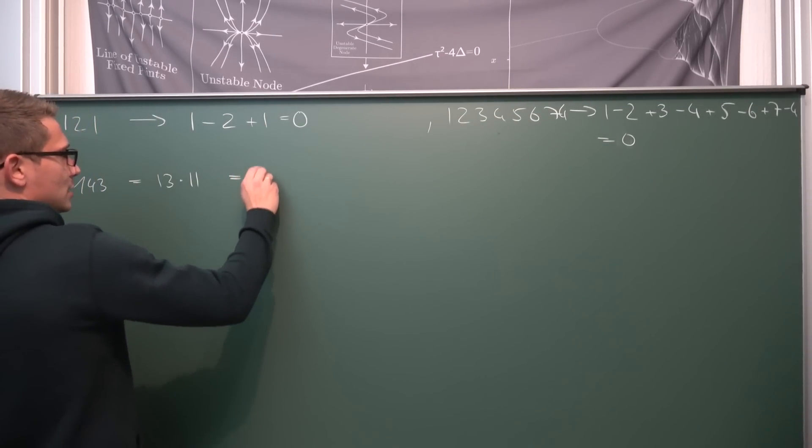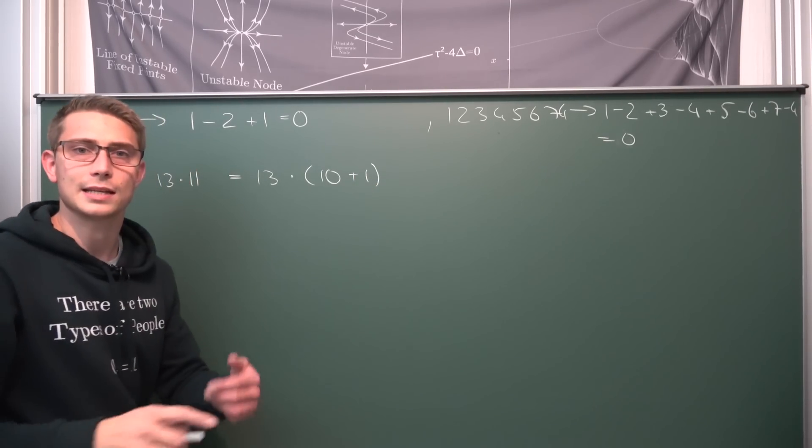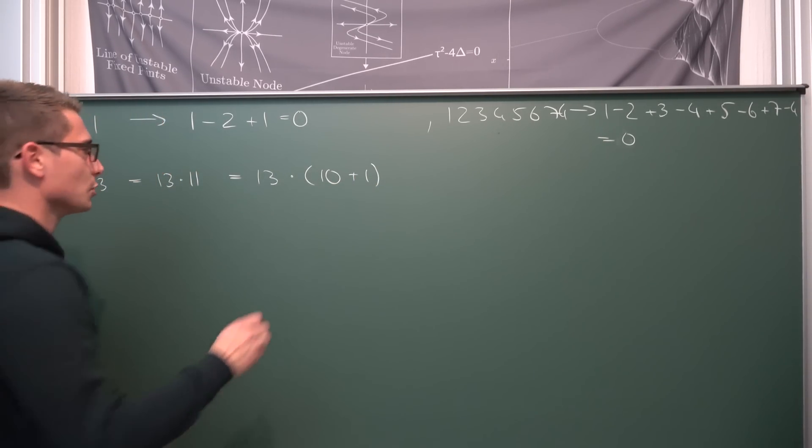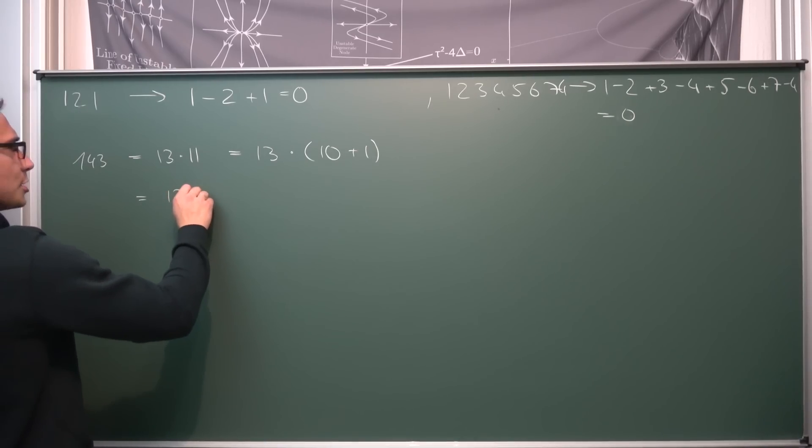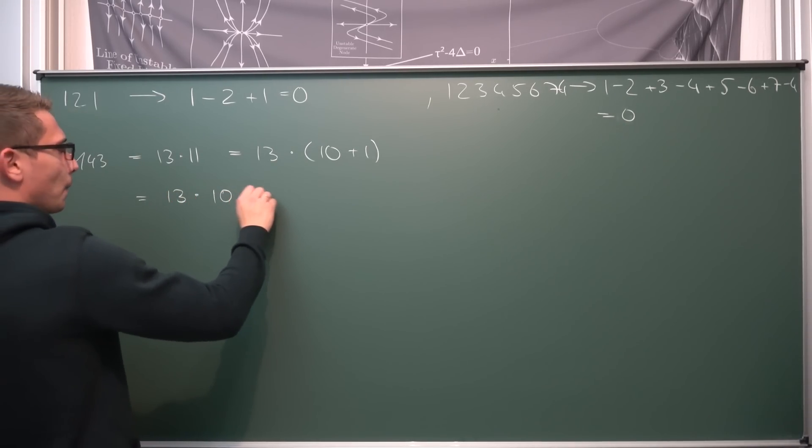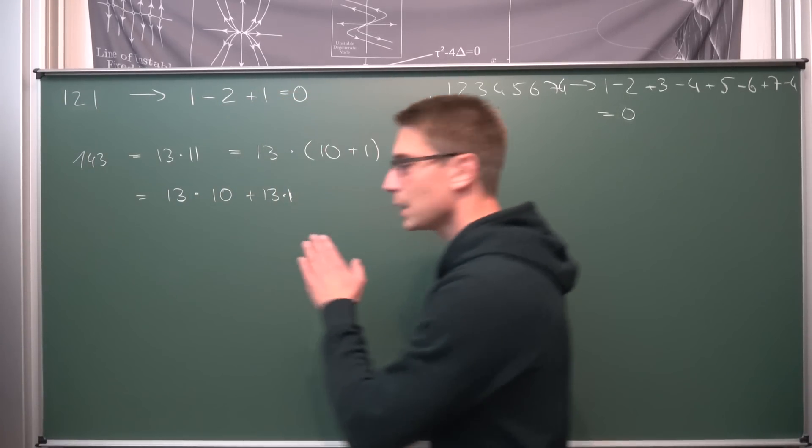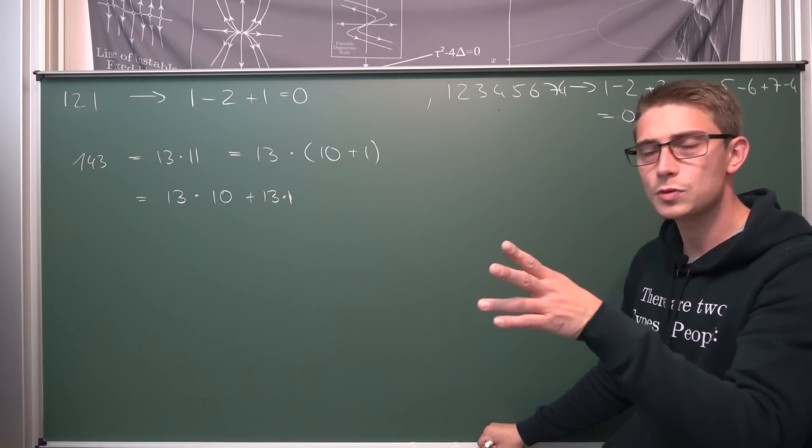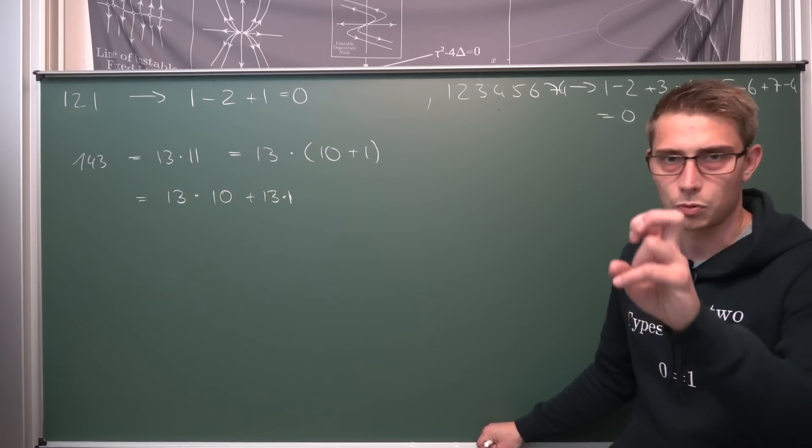So this is the same as 13 times parentheses 10 plus 1. And 1 is nothing other than 10 to the 0th power. And now what we can use is the distributive laws. Meaning we are going to distribute the 13 into here giving us 13 times 10 plus 13 times 1. Okay, this is where we are at right now. And next thing, what we are going to do, and this basically proves it without using modular arithmetic at the moment, proof.